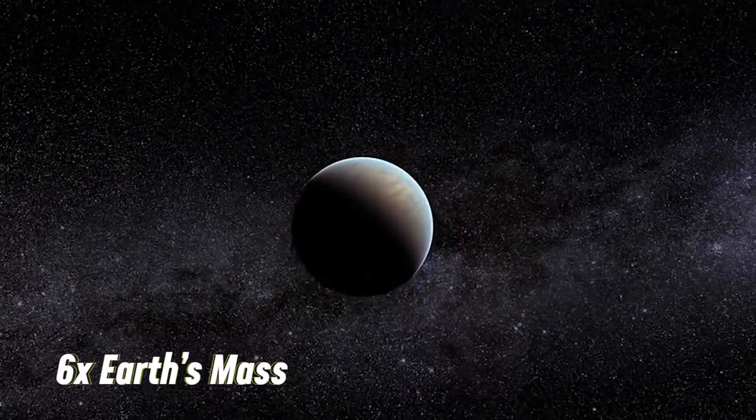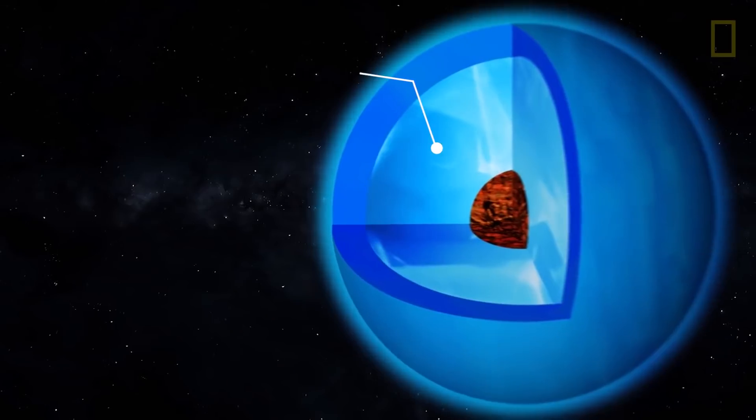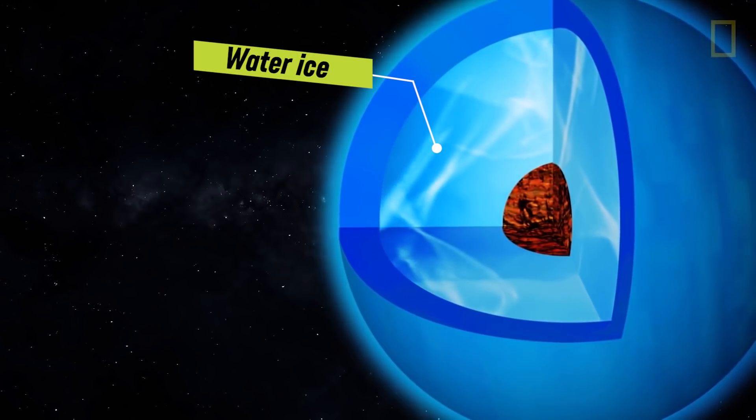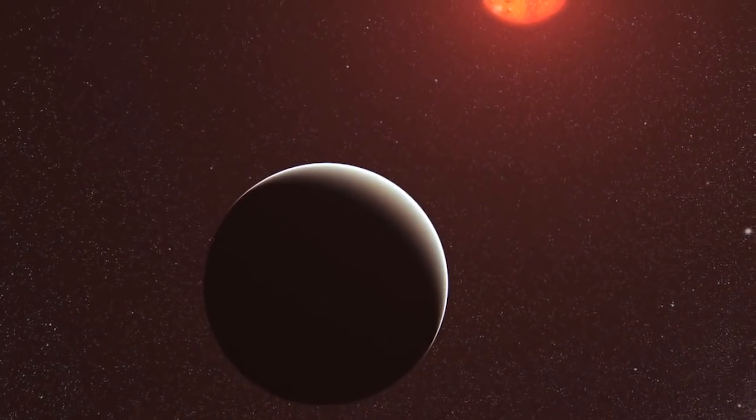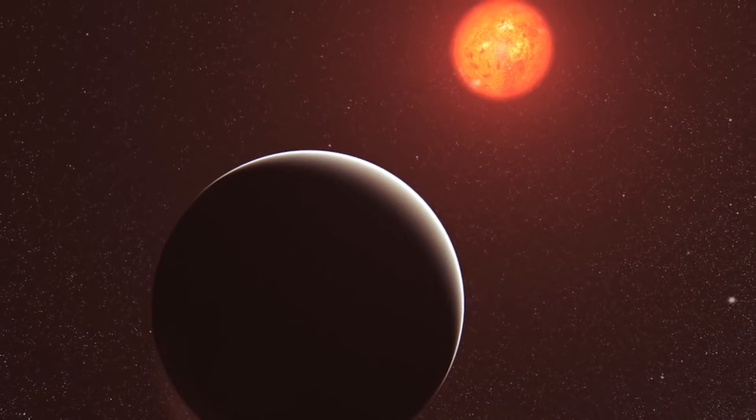The planet, GJ1214b, has a mass about six times that of Earth and its interior is likely mostly made of water ice. It appears to be rather hot and surrounded by a thick atmosphere, which makes it inhospitable for life as we know it on Earth.